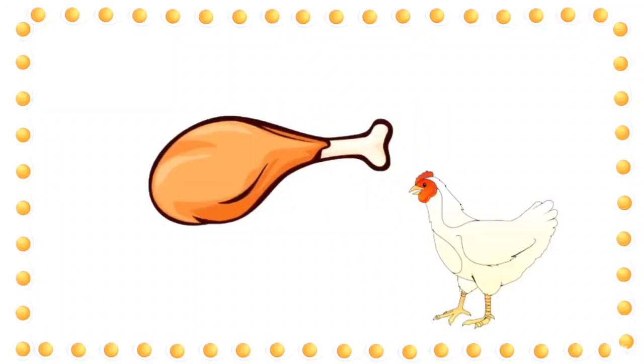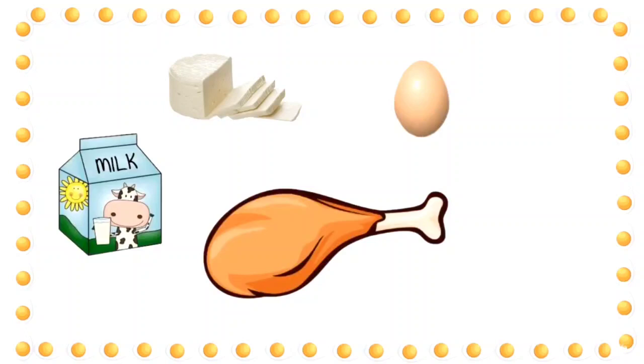Chicken. What's this? A piece of meat. And from where do we get this piece of meat? We get it from chicken. So milk, paneer, egg and meat.